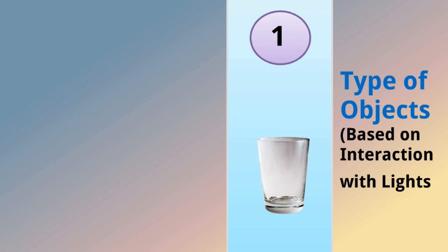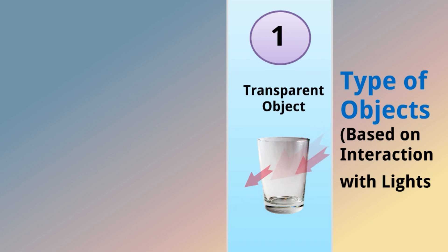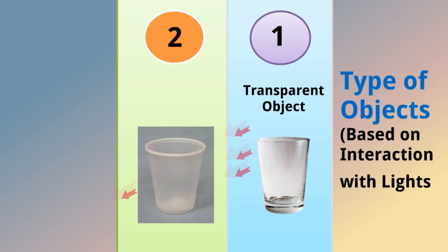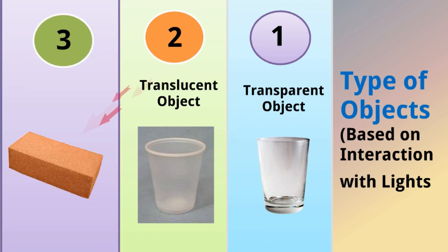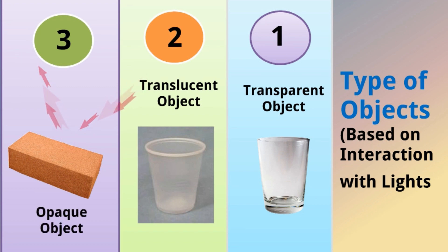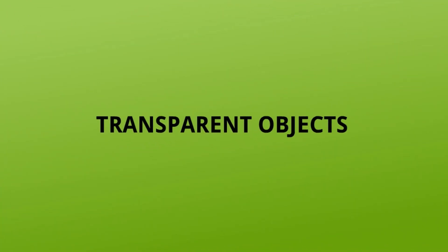Types of objects based on interaction with light: First, glass — light passes through completely, so it is a transparent object. Second, plastic — not all light passes through; some is absorbed and some is reflected, so it is a translucent object. Third, an opaque object — light falls on it but will not pass through; it may be absorbed or reflected. So: transparent means light passes through completely, translucent means light passes through partially, and opaque means light does not pass through.